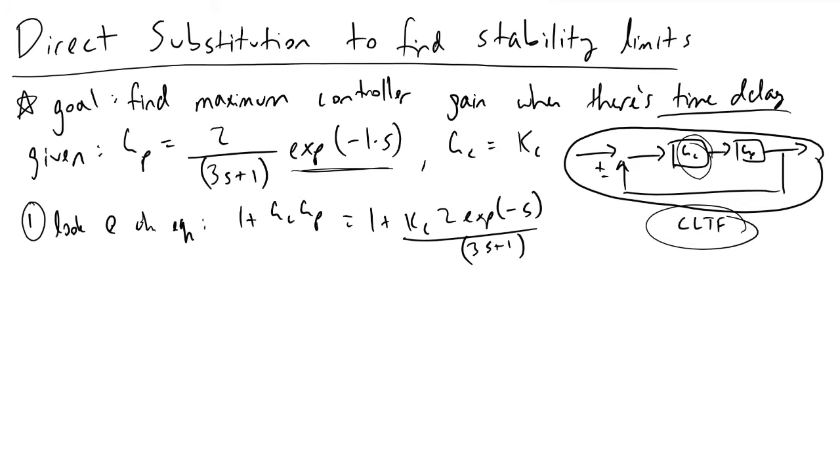If we combine these two terms, what we would have is 3s plus 1 plus 2Kc exponential minus s, quantity divided by 3s plus 1.